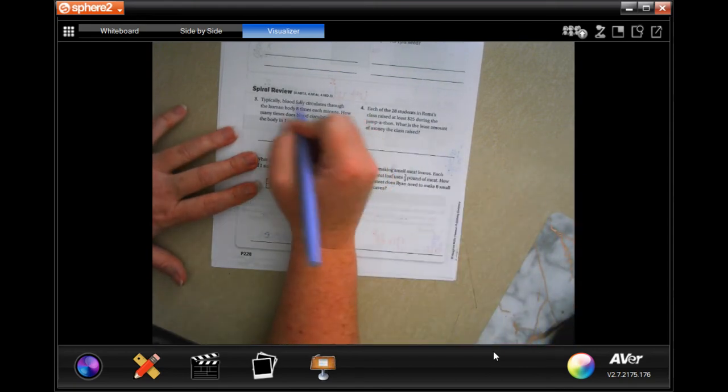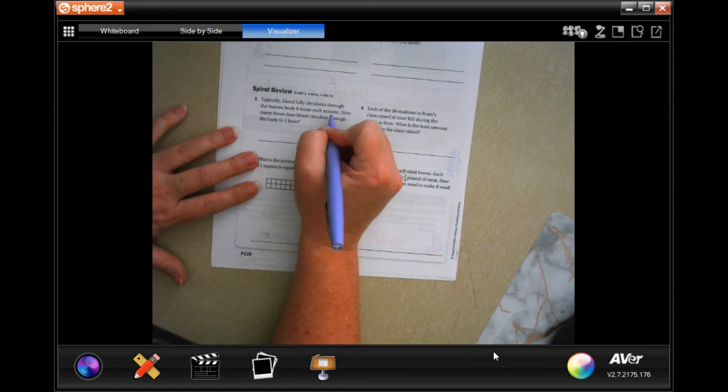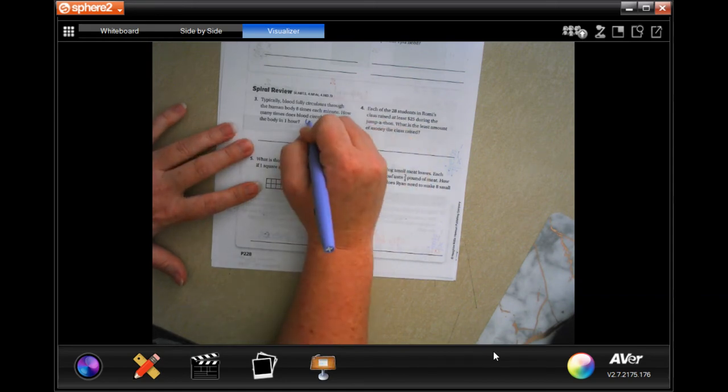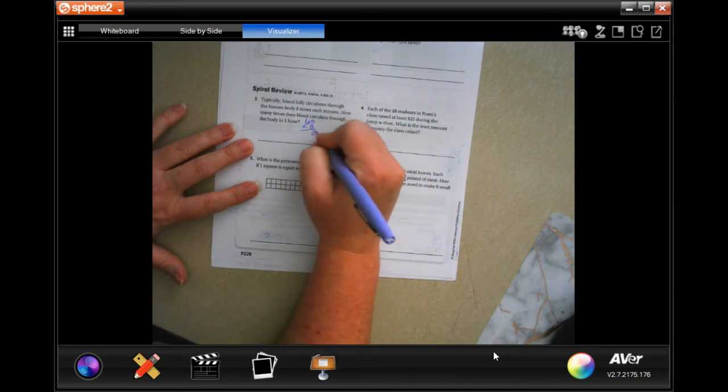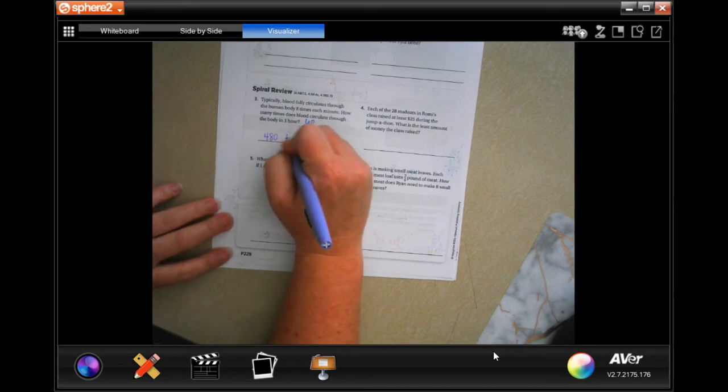All right, well, eight times each minute. Well, a minute, there's 60 minutes in an hour. So, we're going to do 60 times eight. Okay, eight times zero is zero. Eight times six is 48. Four hundred and eighty.